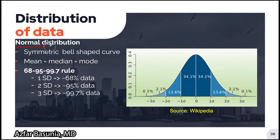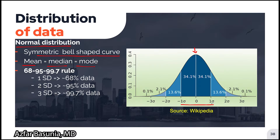A normal distribution is represented by a symmetric bell-shaped curve where the mean, median, and mode are equivalent and lie in the center. The 68-95-99.7 rule describes that for a normal distribution, around 68% of the data set lies within one standard deviation, around 95% lies within two standard deviations, and around 99.7% lies within three standard deviations.